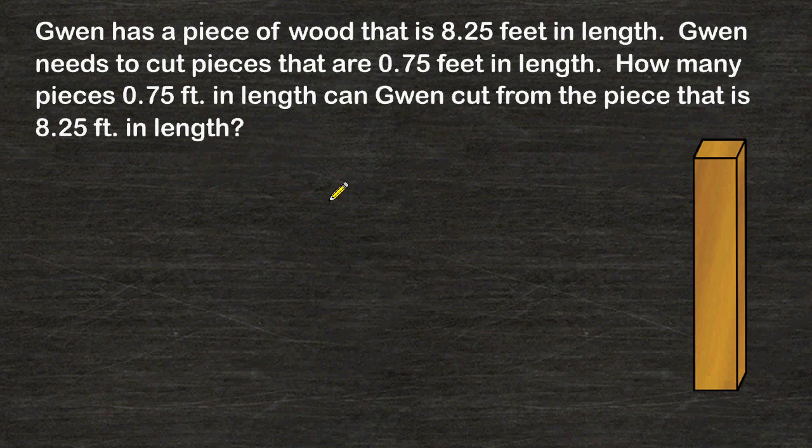In this problem, it reads that Gwen has a piece of wood that is eight and one quarter of a foot in length. The problem also says that she needs to cut pieces that are three quarters of a foot in length. How many pieces that are three quarters of a foot in length can Gwen cut from her original piece is what we're trying to figure out.